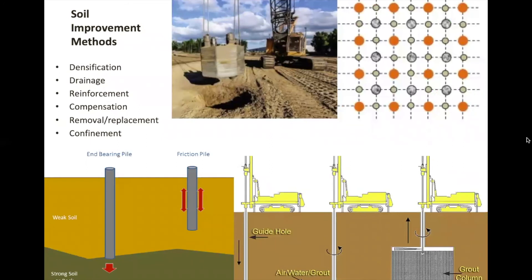If possible and necessary, steps can be taken to improve stability of the soil and reduce the chances of earthquake-induced liquefaction. Different methods of soil improvement have been used, and they're based on the cost and effectiveness with a certain kind of sediment. Some of the common strategies for improving the strength of the soil include densification, drainage, reinforcement, compensation, removal and replacement of the soil, and confinement. These are all just trying to strengthen the soil against cyclic liquefaction.